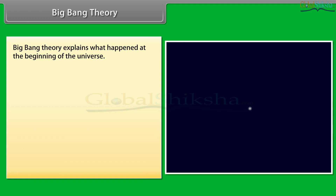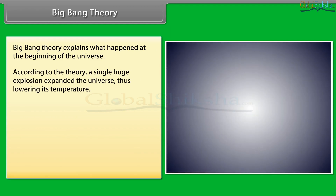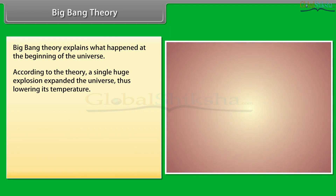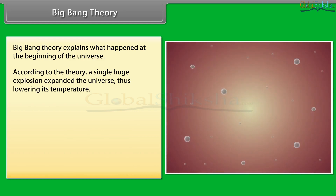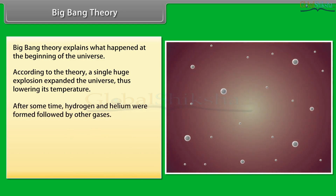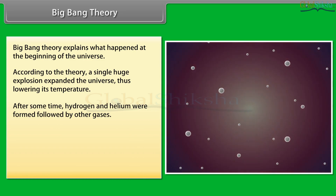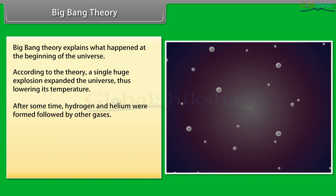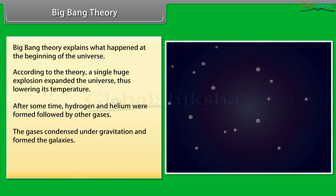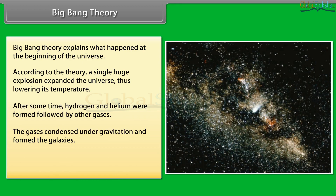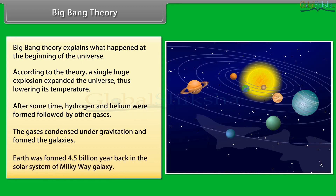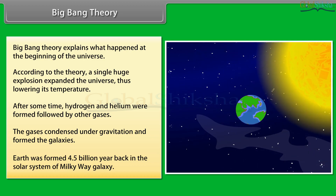Big Bang Theory explains what happened at the beginning of the universe. According to the theory, a single huge explosion expanded the universe, thus lowering its temperature. After some time, hydrogen and helium were formed, followed by other gases. The gases condensed under gravitation and formed the galaxies. Earth was formed 4.5 billion years back in the solar system of the Milky Way Galaxy.